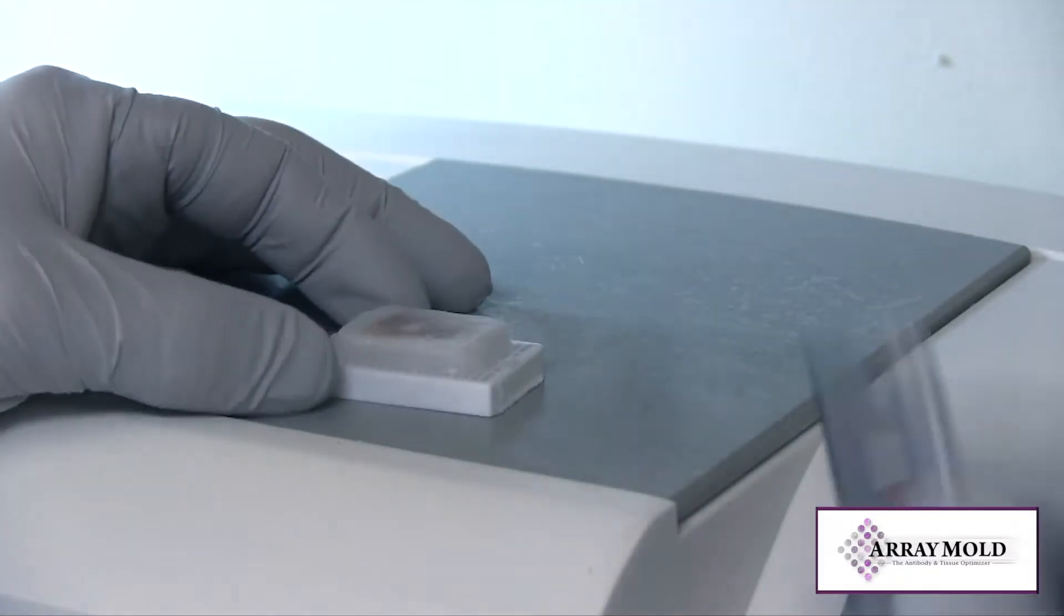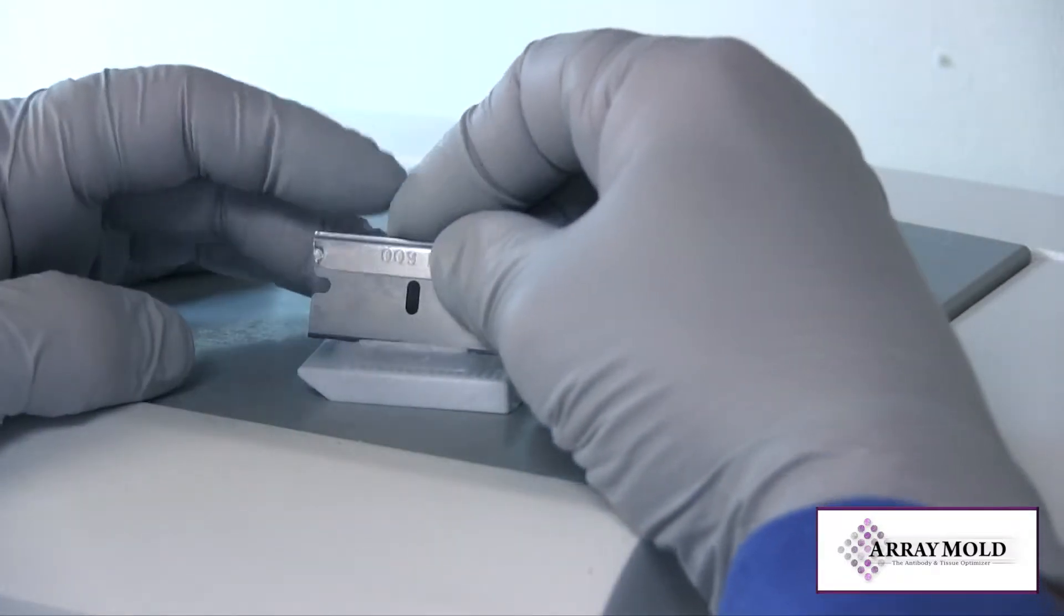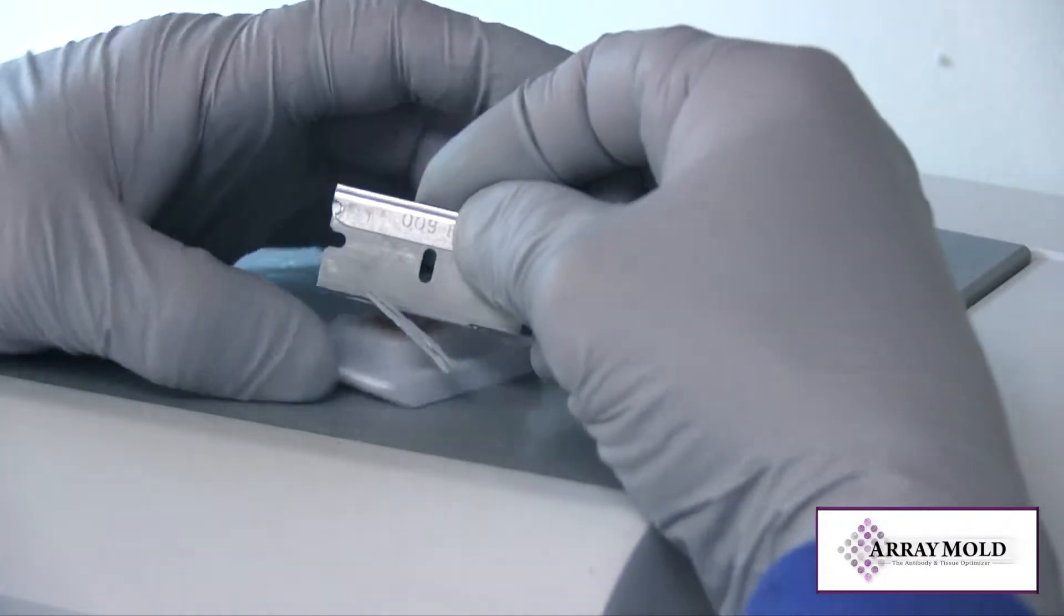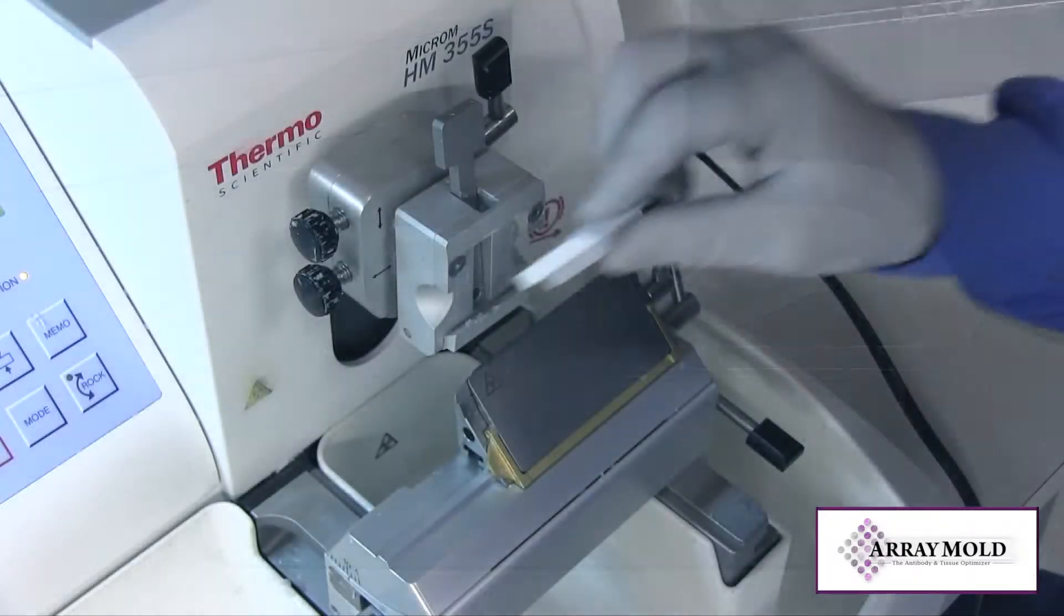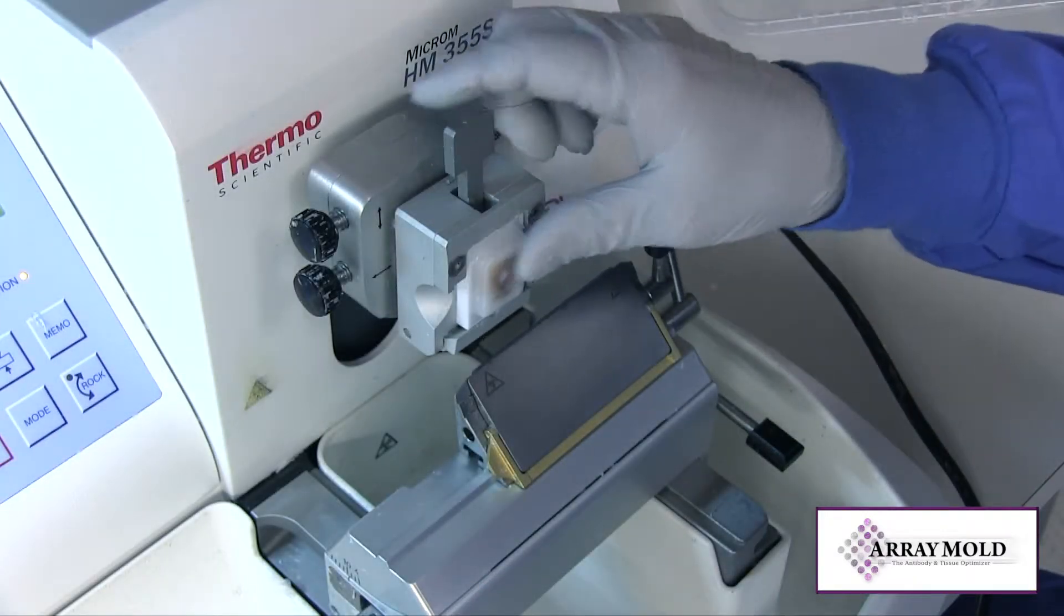Prep the block by trimming away the sides so the block can ribbon easily when sectioning. You will need to trim into the block a little bit because the surface is coated in paraffin.